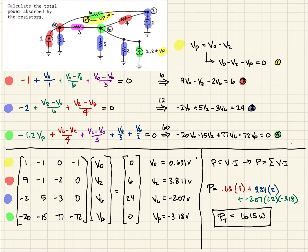This is the total power supplied and absorbed. They asked for the absorbed, but by conservation of energy the two must be equal. If we calculate all the power supplied by the three current sources at the three nodes, that equals the total power absorbed by all the resistors in the network.